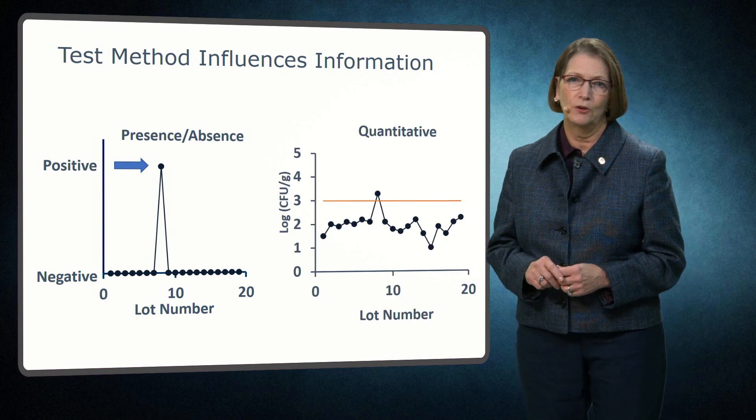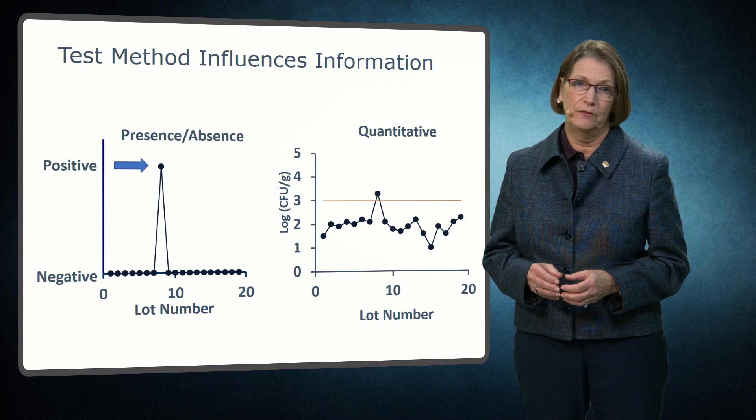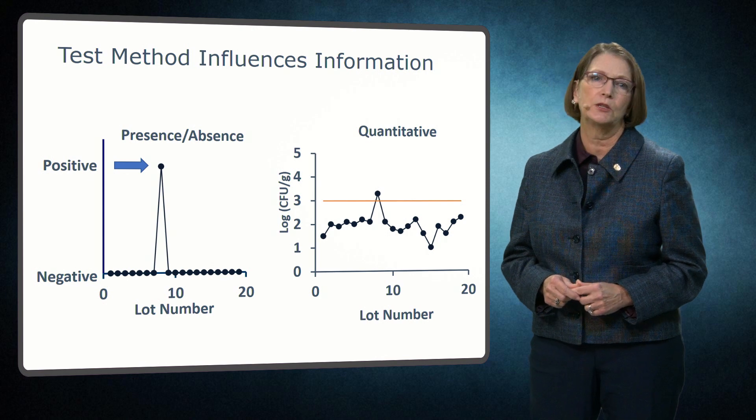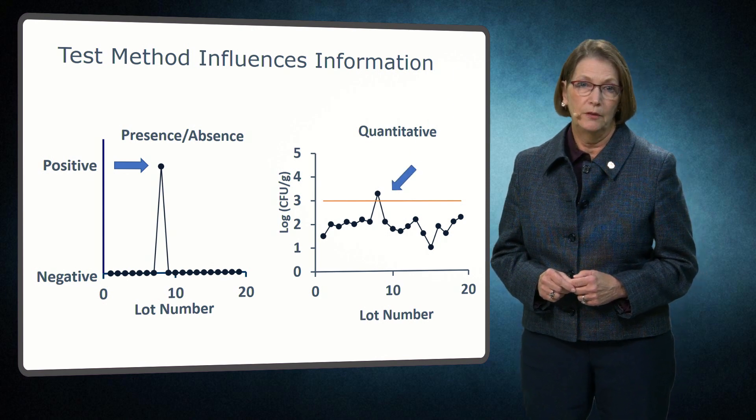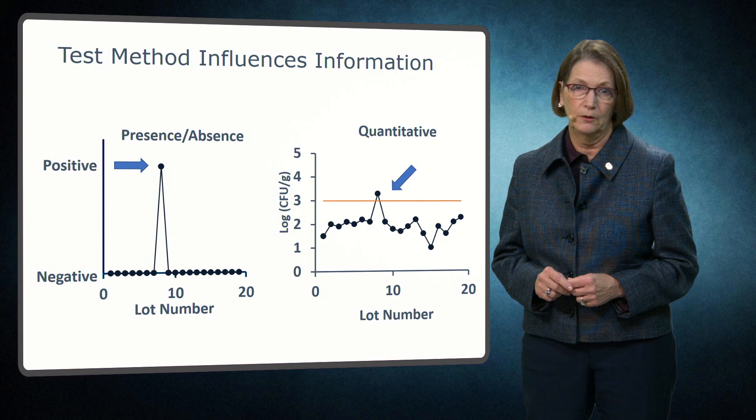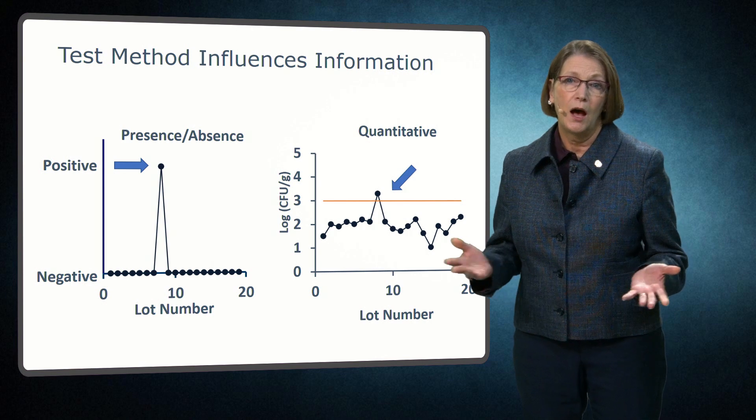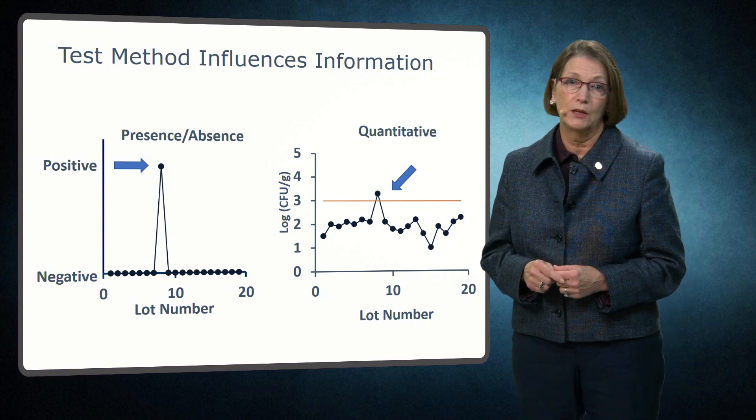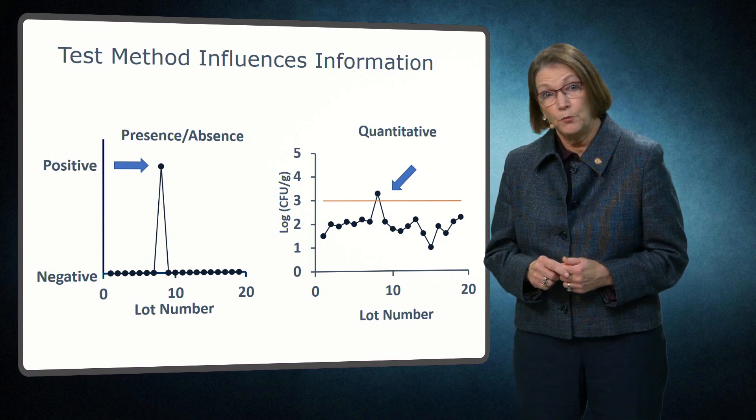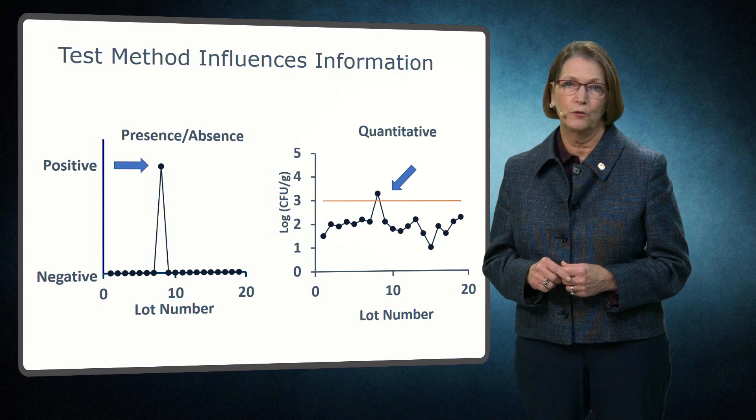This chart also illustrates hypothetical data for packaging line B, however, a quantitative indicator is used. Many times, quantitative testing provides more actionable information for verification purposes. In this example, the line indicates a hypothetical maximum acceptable level for the indicator. When the data indicate that lot 8 exceeds the acceptable levels, other lots are well within the acceptable range. This example provides assurance that conditions present support safe production of food, while the company takes action to determine the root cause of the unacceptable result for lot 8.